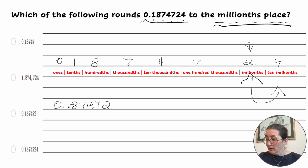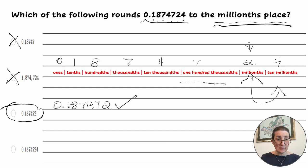Now let's look at the answers that we can choose from. 0.18747. That only takes it to the hundred thousandths place, so that is not correct. 1,874,724 is far too large of a number. It's in the one millions, not the one millionths, so that is incorrect as well. 0.187472 is exactly what we have here, so that is probably our answer. And let's look at the last one just to make sure. 0.1874724. That is the number before it was rounded, so that is not the correct answer. So indeed, this one is our correct answer today.